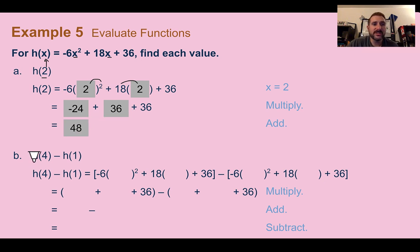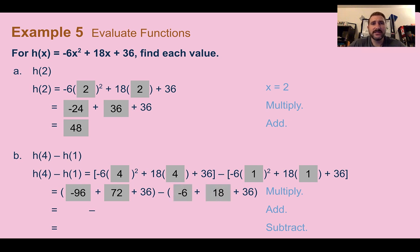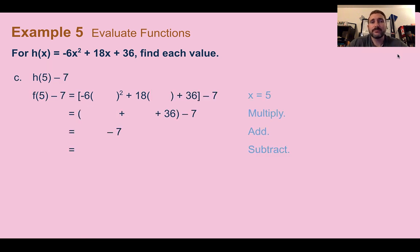For part b, find h of 4 minus h of 1. Plugging in 4: we get negative 96 plus 72 plus 36, which is 12. Plugging in 1: negative 6 plus 18 plus 36 gives 48. So 12 minus 48 is negative 36.